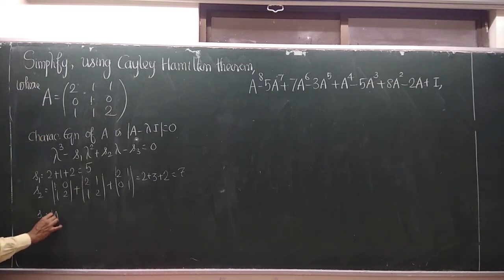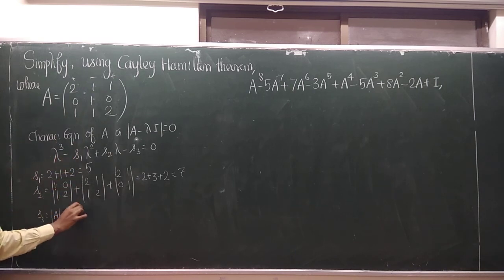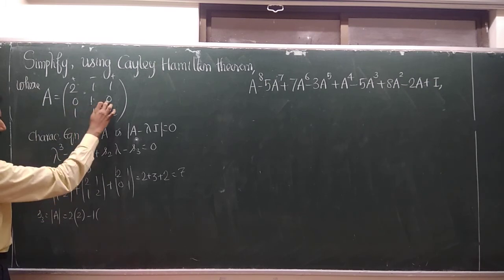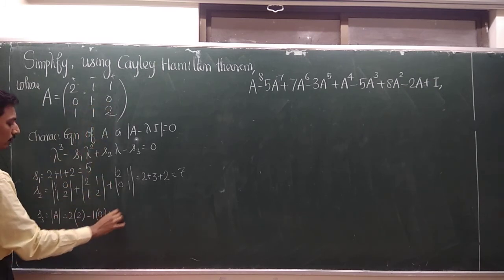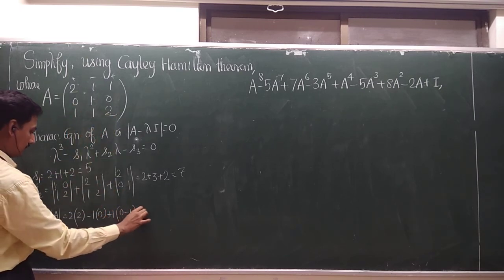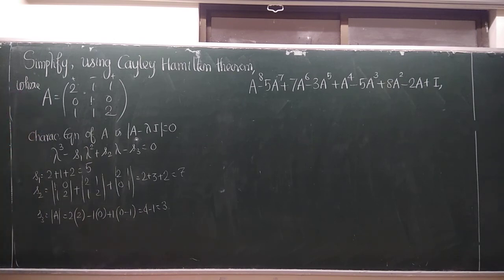What about S3? S3 is the determinant of A. So it's equal to plus, minus, plus. So 2 into 1, 2 is equal to 2, minus 1 into this row, this column is equal to 0, minus 0, so 0, plus 1 into this row and this column, 0 into 1 is 0 minus 1. So 4 minus 1 is equal to 3. So I find out S1, S2, S3. So S1 is 5, S2 is 7, S3 is 3.